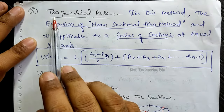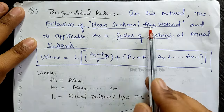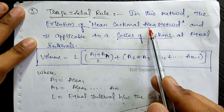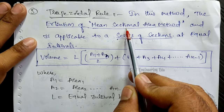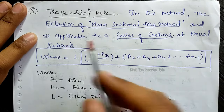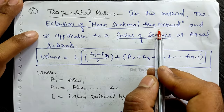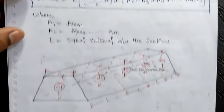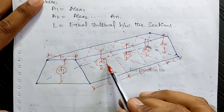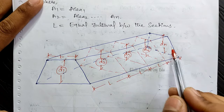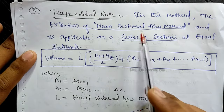The third method is the trapezoidal rule. This method is an extension of the mean sectional area method. In the mean sectional area method we used only two sections — the starting and end section — but in the trapezoidal rule there is a series of sections. When more than two sections are present we follow the trapezoidal rule, and when only two sections are present we follow the mean sectional area method.